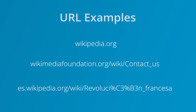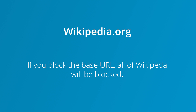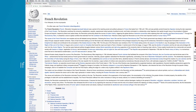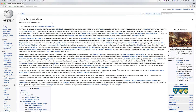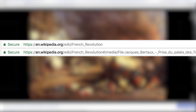If you block the base URL, then all of Wikipedia will be blocked for students. If you block the URL with a directory folder, then just that article and any items related to that article will be blocked. For example, blocking a Wikipedia article will also block the painting 'Storming of the Two Ray Palace,' since it lives in the same directory.